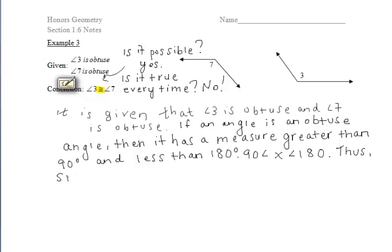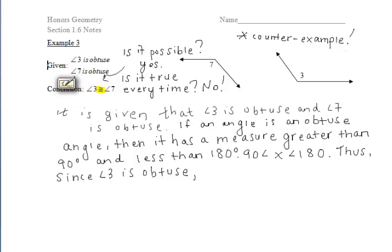Since angles 3 and 7 are both obtuse, let's provide what we call a counterexample to show that although this may be true if both angles have the same measure, we can have two obtuse angles with different measures. For example, we can say that the measure of angle 3 is — let's choose an obtuse angle — let's say it's 110 degrees.